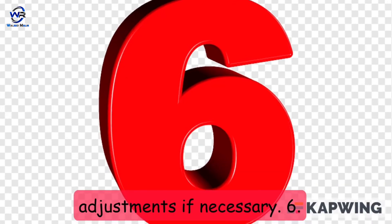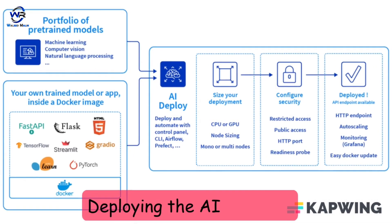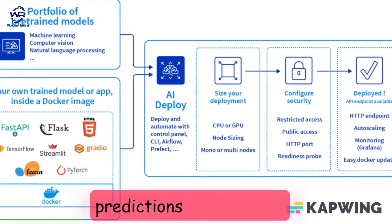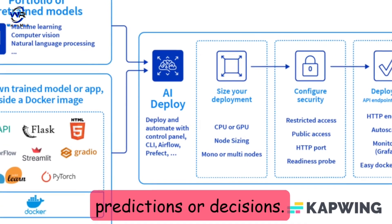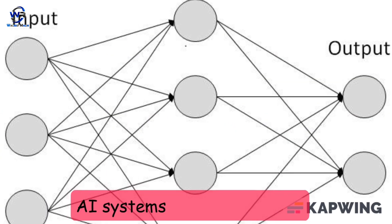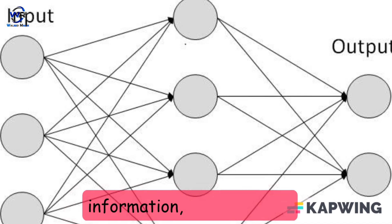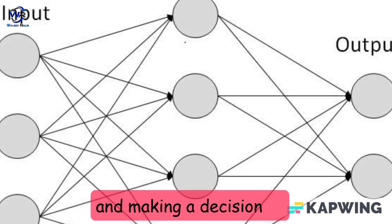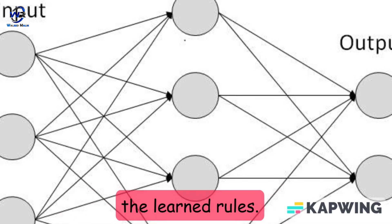Step 6: Deployment — deploying the AI model to work on new data and make predictions or decisions. AI systems work by taking in information, processing it, and making a decision or prediction based on the learned rules.